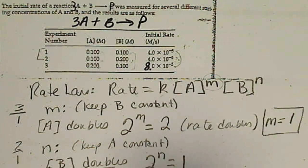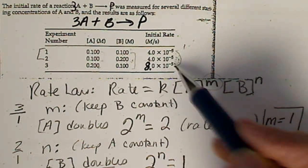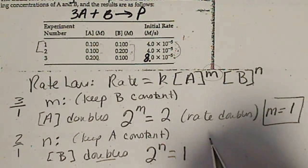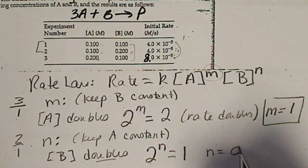If we ratio this number to this number, that equals 1. So, in other words, we can double B, and the rate does not change. So that means N equals 0.